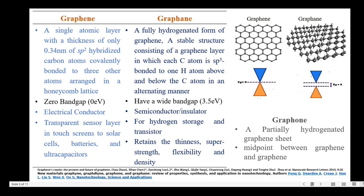Next, let us see the differences between graphene and graphane. Graphene is a single atomic layer with a thickness of 0.34 nanometer of sp2 hybridized carbon atoms, covalently bonded to three other carbon atoms, arranged in a honeycomb lattice. Graphane is a fully hydrogenated form of graphene — it is a stable structure consisting of a graphene layer in which each carbon atom is sp3 bonded to one hydrogen atom above and below in an alternating manner.